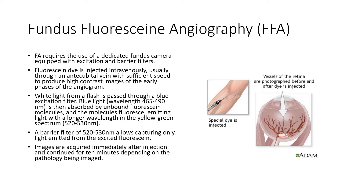The technique involves a dedicated fundus camera with an excitation and barrier filter. Twenty percent fluorescein dye, about 2 ml, is injected into the cubital fossa veins. It reaches the venous circulation, is pumped into the arterial blood flow, and reaches the retinal tissue and blood vessels. A key characteristic is that the majority of the dye is bound to blood proteins, so very little leaks out from retinal blood vessels, which have tight junctions.